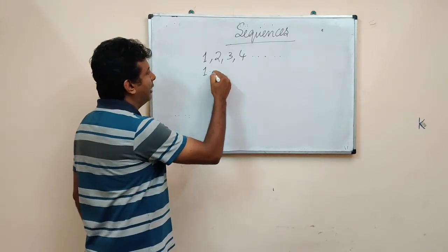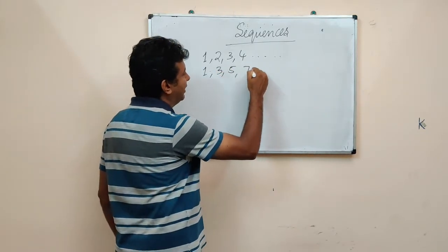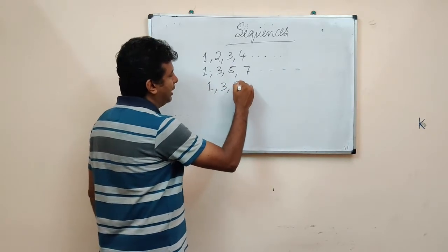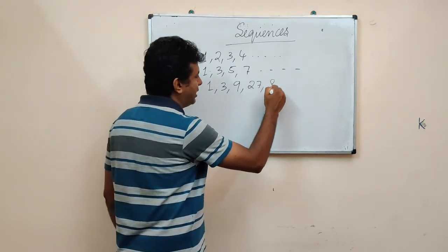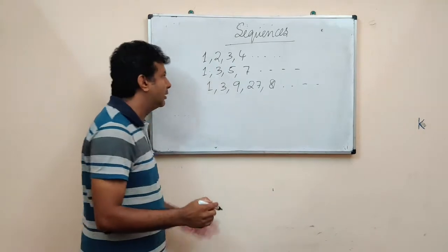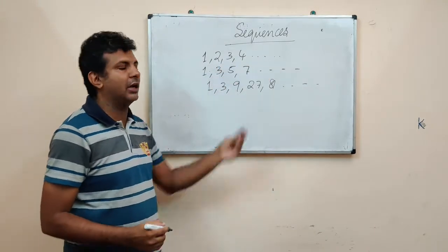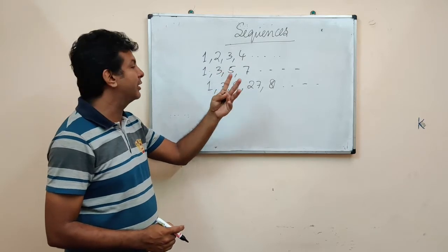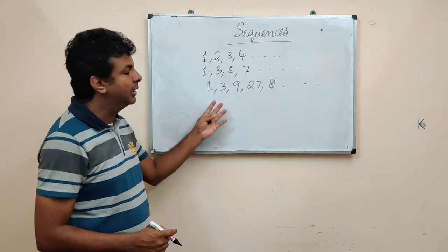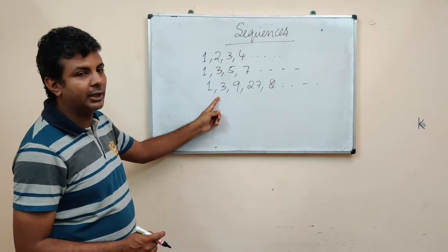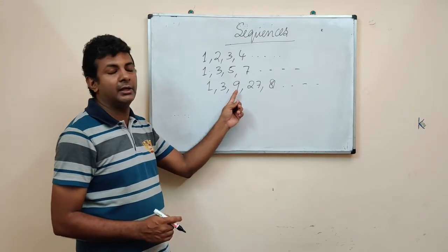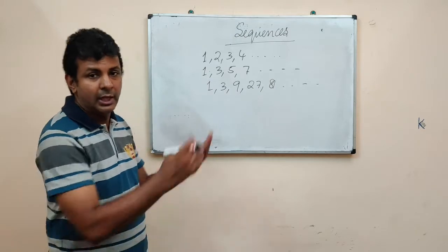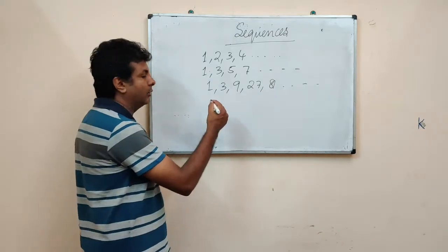Now you see 1, 3, 5, 7, etc. is a pattern. And 1, 3, 9, 27, 81, etc. is also a pattern. In this case, these are all natural numbers. These are all numbers with a common difference of 2. In the third case, you see 1 multiplied by 3 is 3, 3 multiplied by 3 is 9, 9 multiplied by 3 is 27 and so on. Now it can be in the reverse order also.